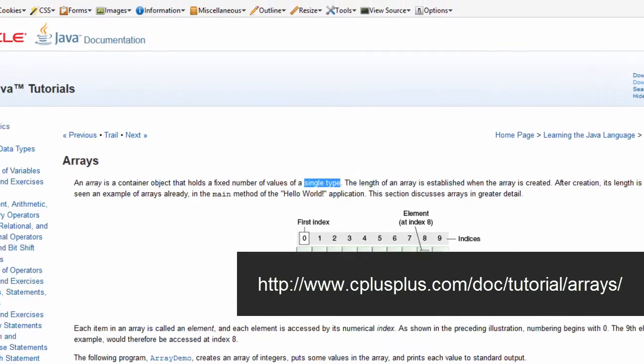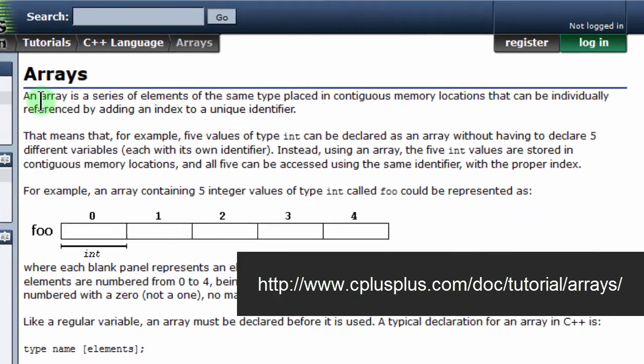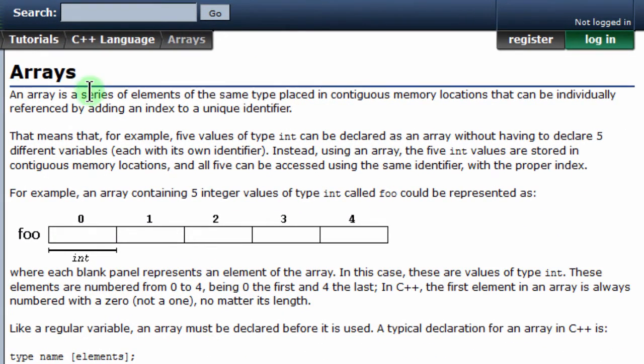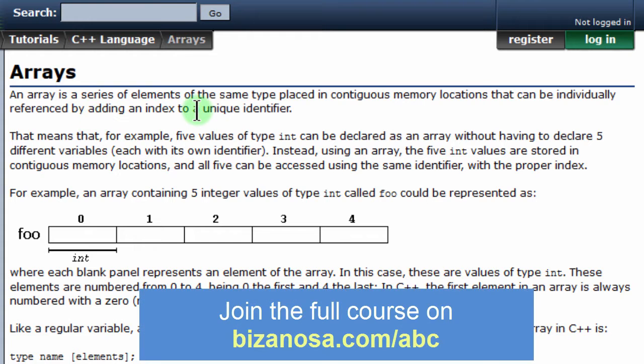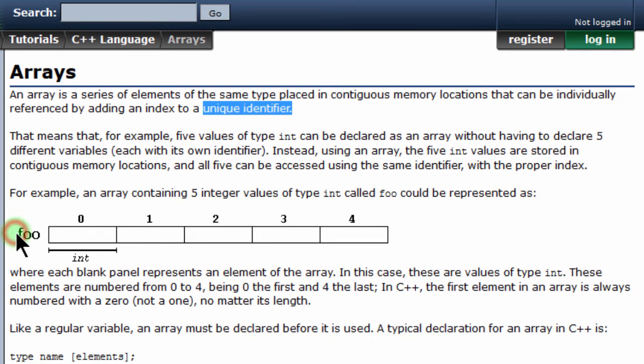So let's go to C++. This is my favorite definition and it says an array is a series of elements of the same type placed in contiguous memory locations that can be individually referenced by adding an index to a unique identifier. So the identifier is the name of the array. If the name of this array was full, this full would be the identifier. And then the index, I showed you the index, this one. So it starts from zero. That's why it's a zero based index.